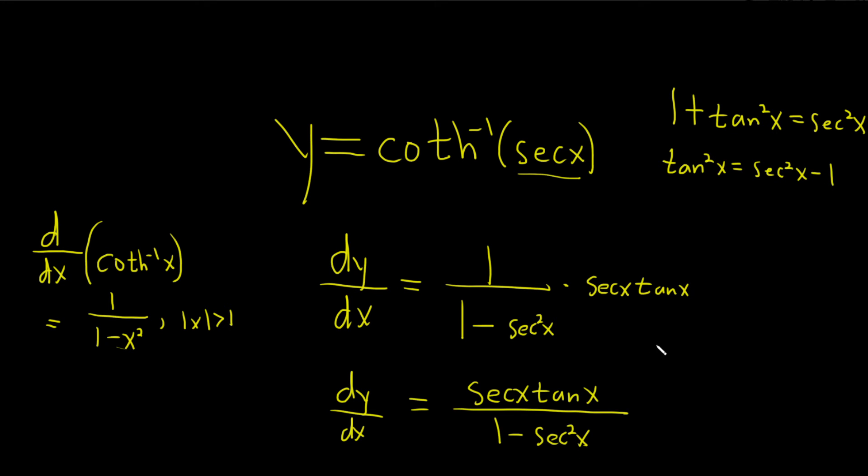So here we have 1 minus secant squared. So if you multiply by negative 1, that gives us negative tan squared equals 1 minus secant squared.